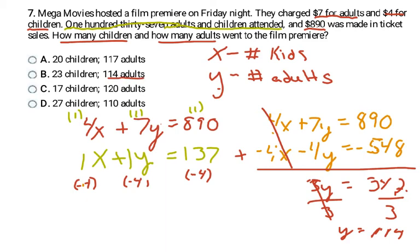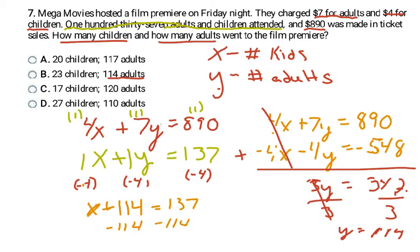I'll go ahead and check by substituting y = 114 back into the simpler equation x + y = 137. So x + 114 = 137. Subtracting 114 from both sides gives x = 23. So there are 23 children, which matches answer B. That confirms B is the correct answer.